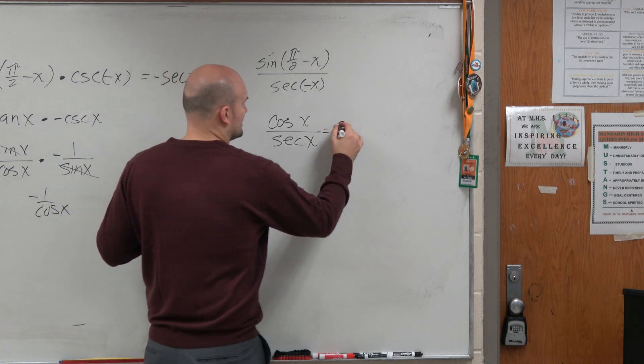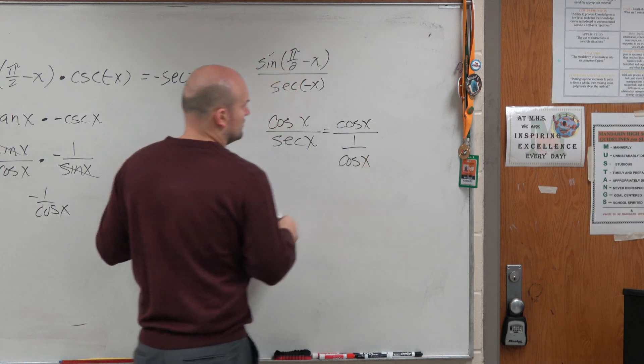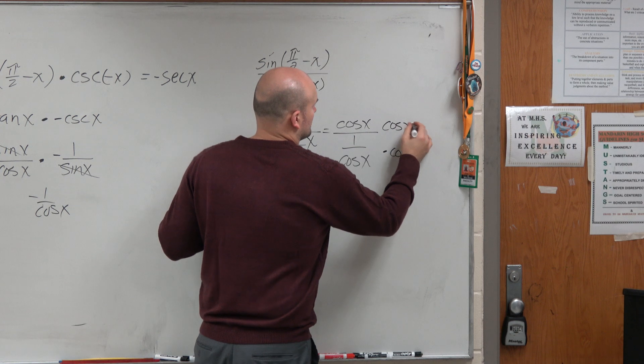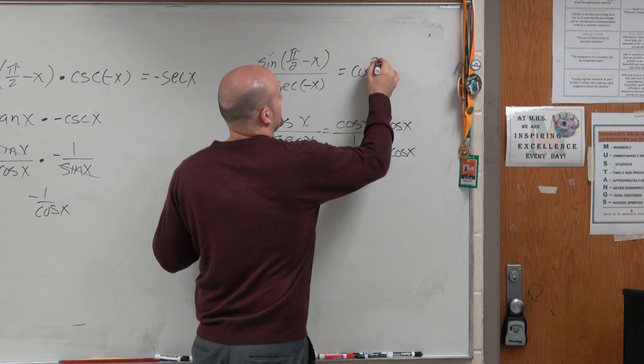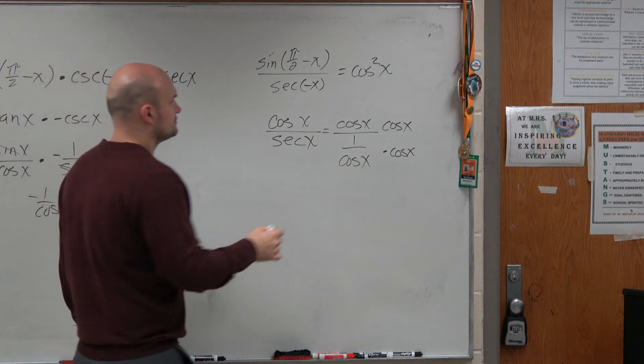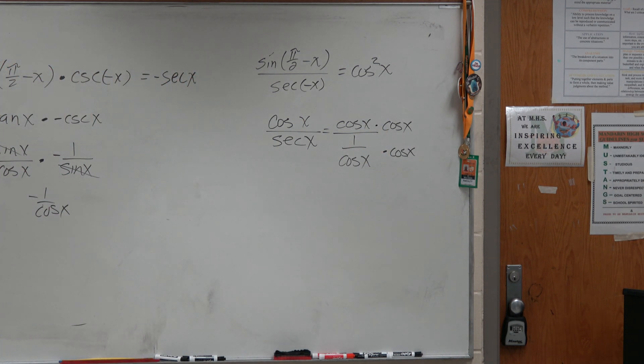So therefore, we can rewrite this as cosine of x over 1 over cosine of x. To get rid of that in the denominator, I'll just multiply by cosine of x, cosine squared of x. Got it?